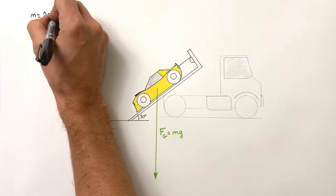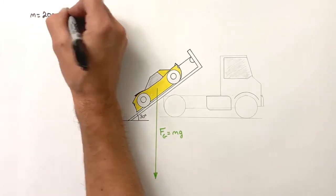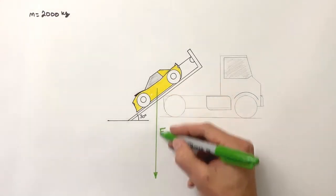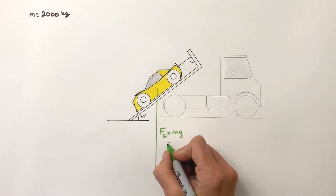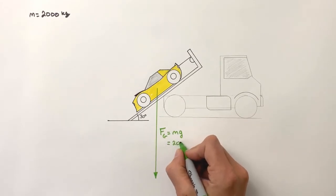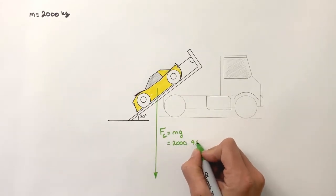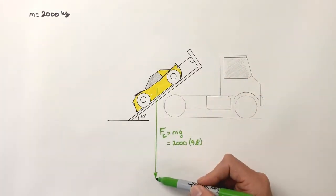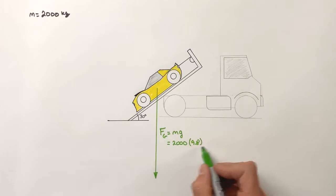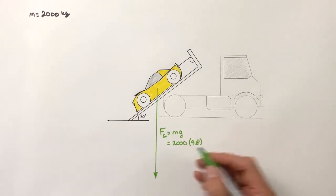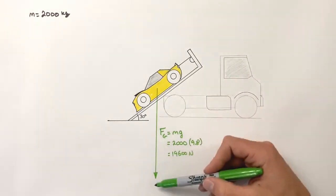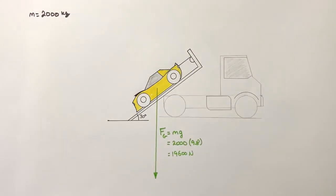If we want to find the weight of the car, that is the magnitude of this force by gravity, we're going to do 2,000 times 9.8. We don't need to make this negative because we've already shown direction using this arrow. So, 2,000 kilograms times 9.8 meters per second squared is going to give us 19,600 newtons. That is the weight of the car. That's how hard gravity is pulling down on this.